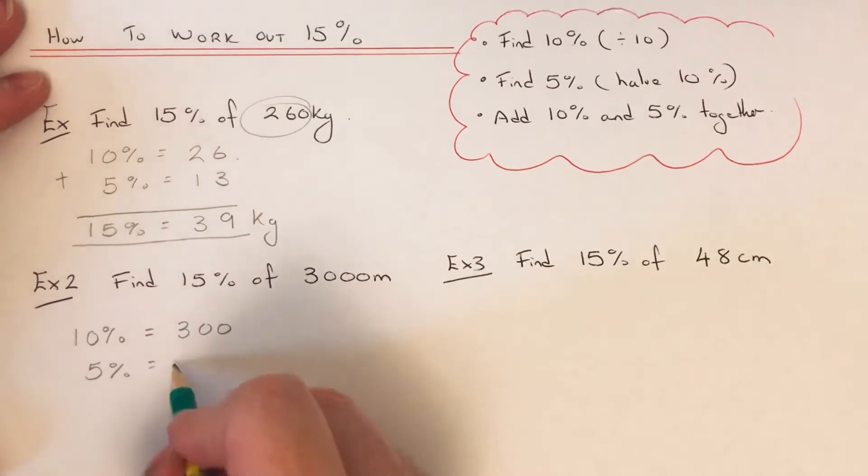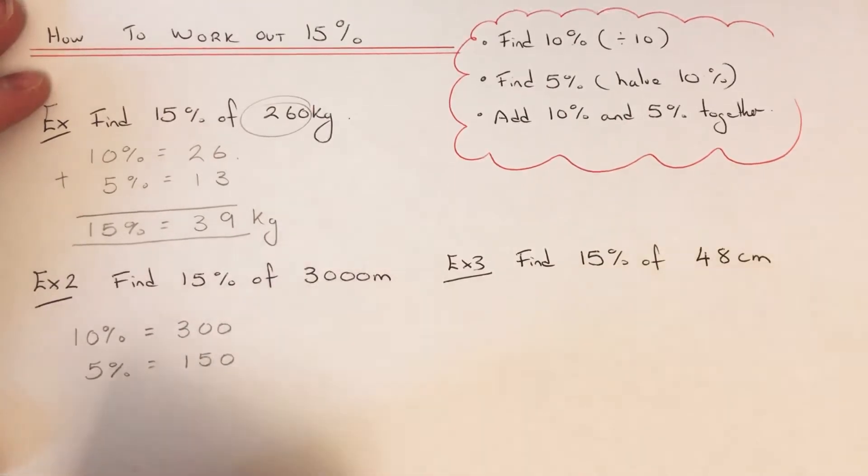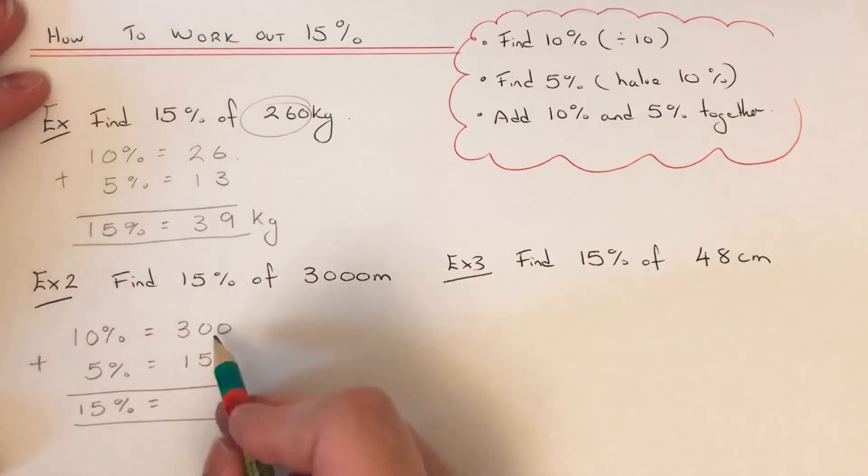half 300, which is 150. Again, we add the two amounts up, which gives 15%. So 300 add 150 is 450 meters.